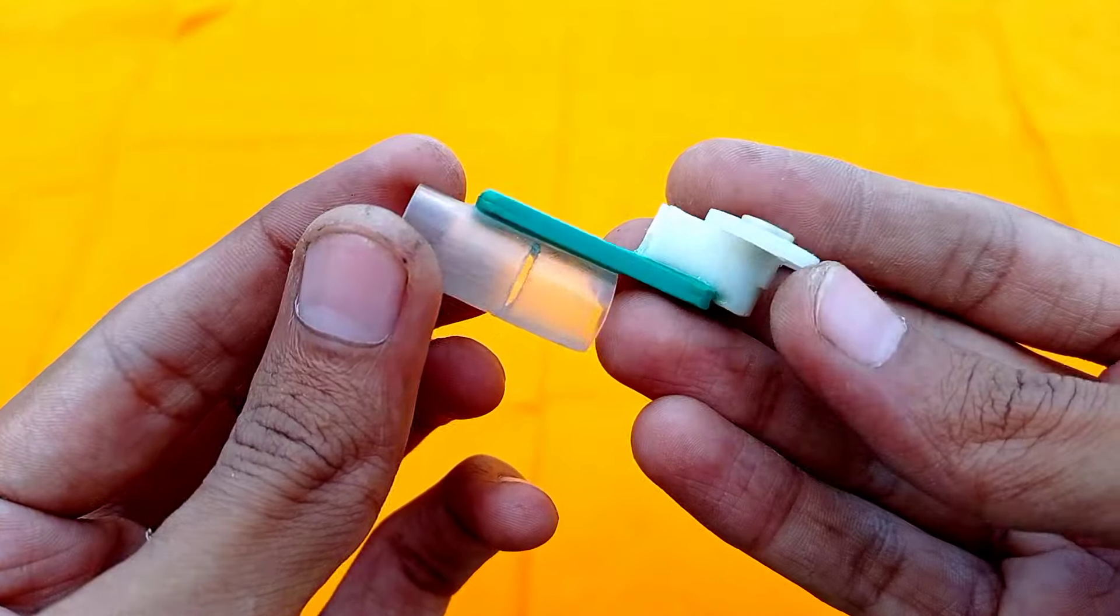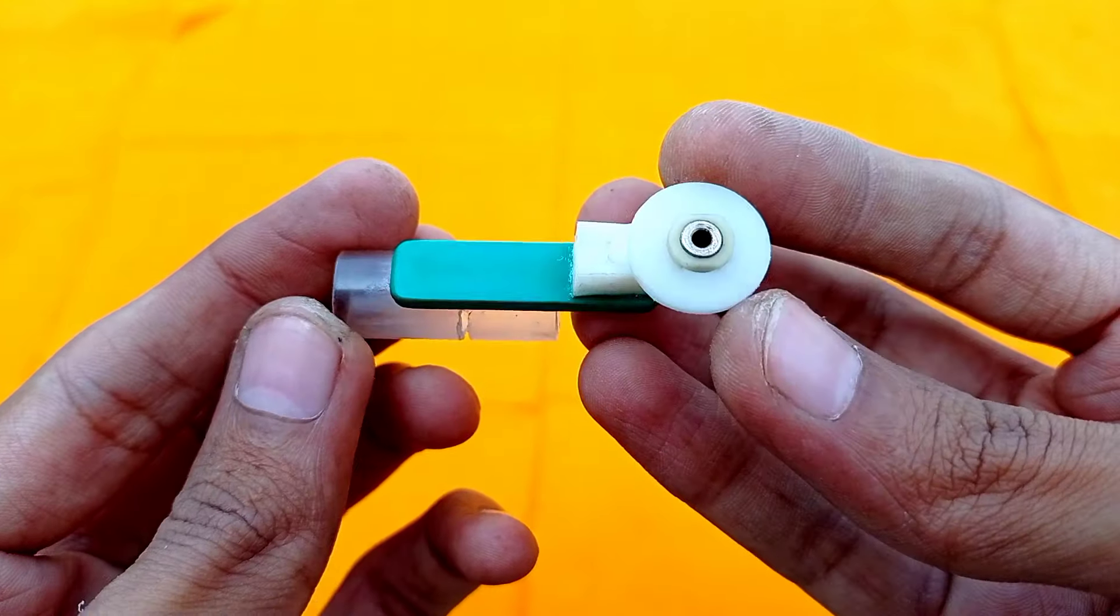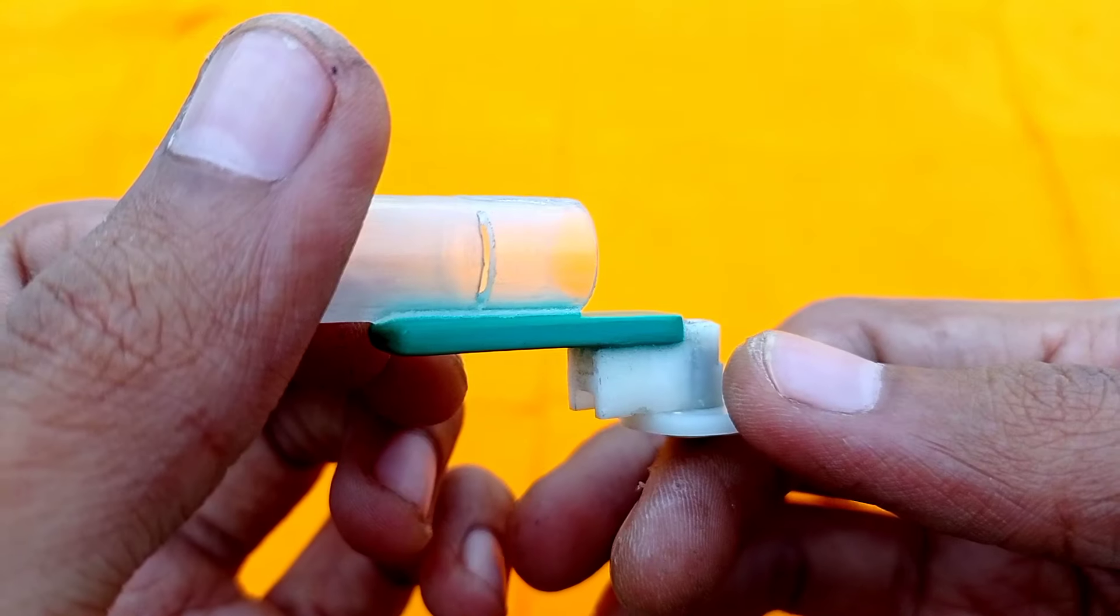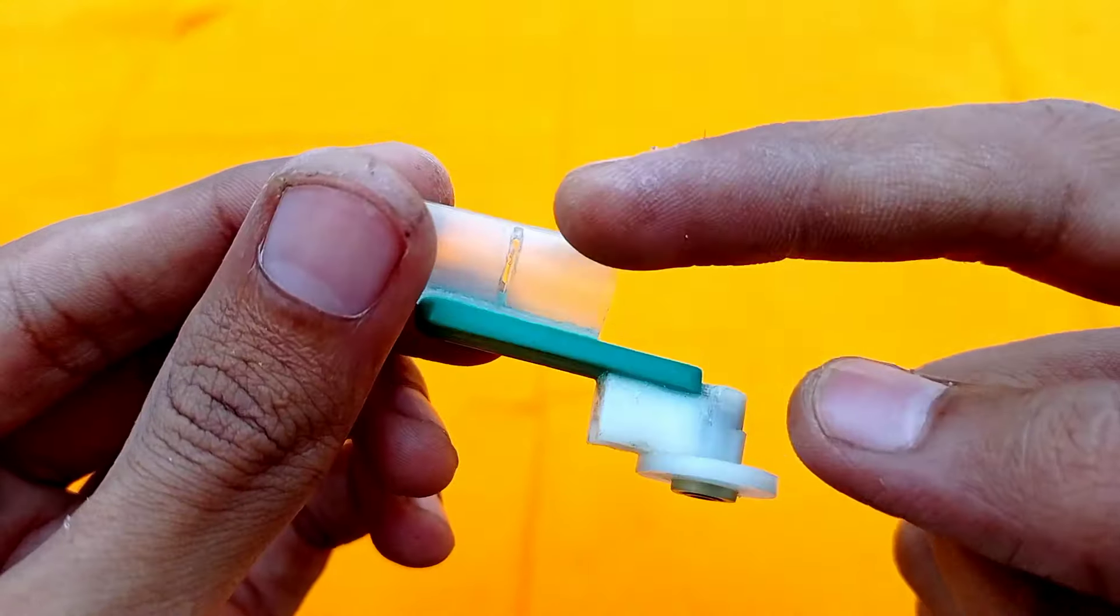After connecting the cylinder to the plastic part, our engine body is finally ready. For the air outlet, I cut this gap on the cylinder.